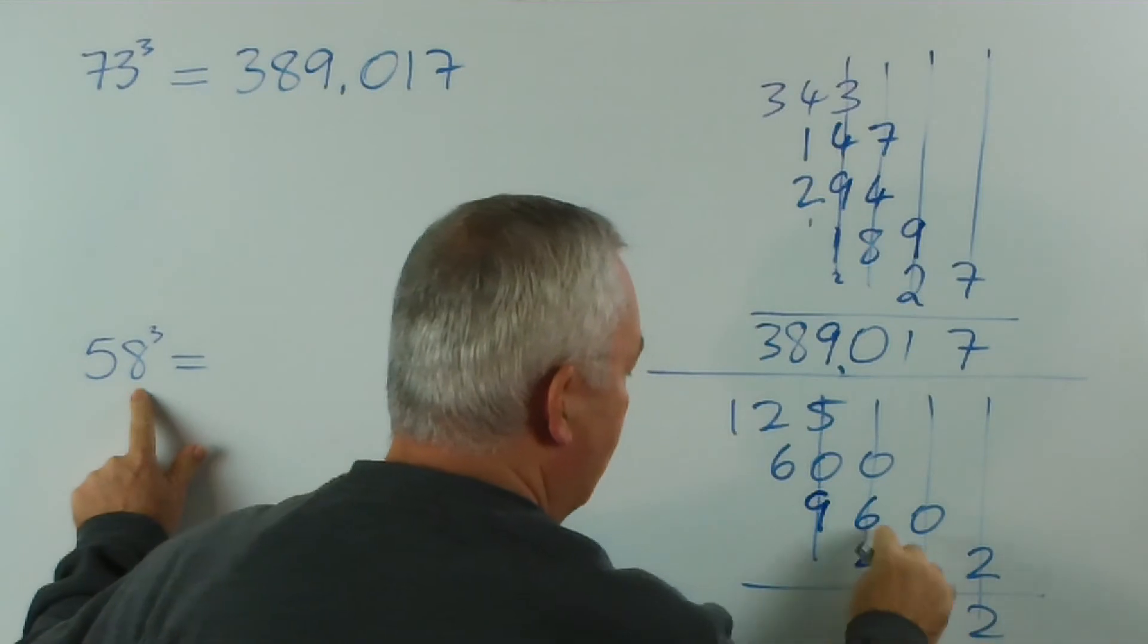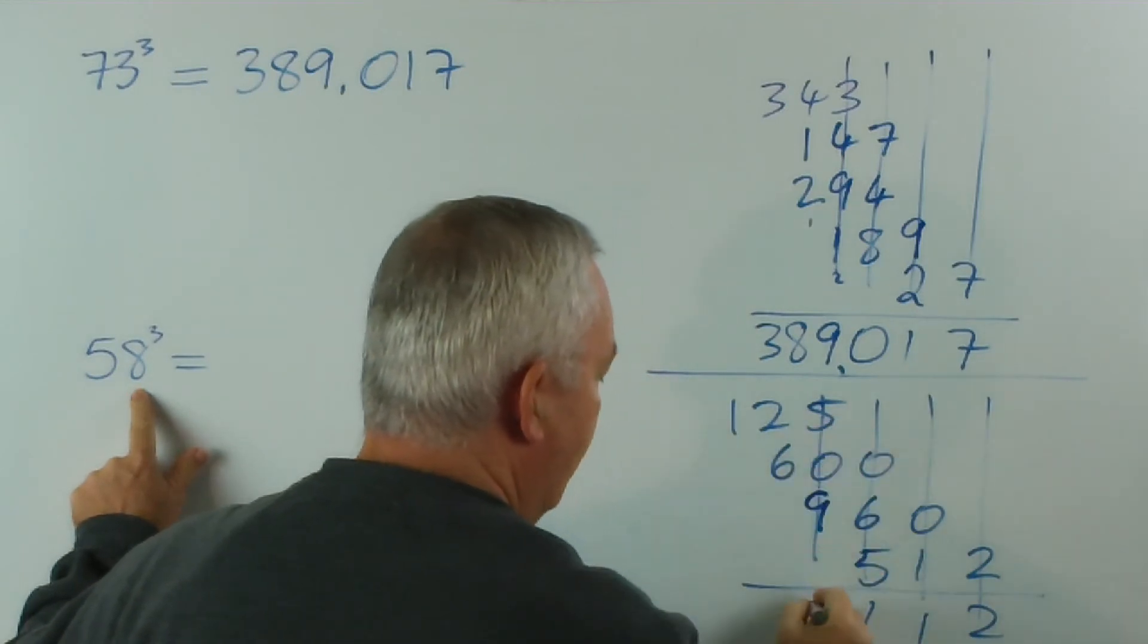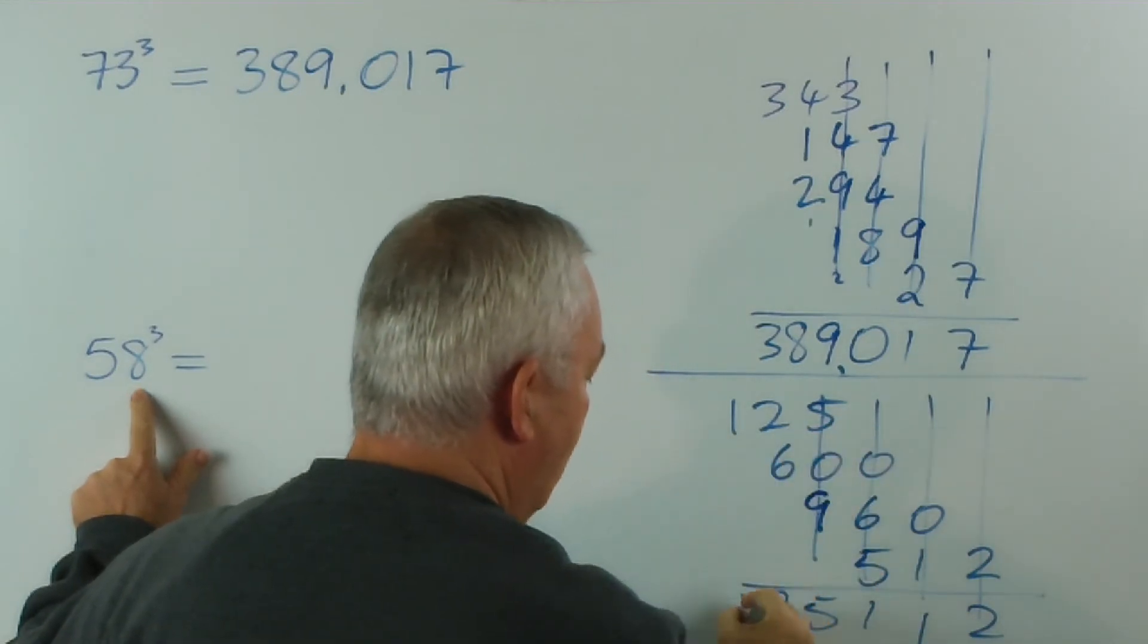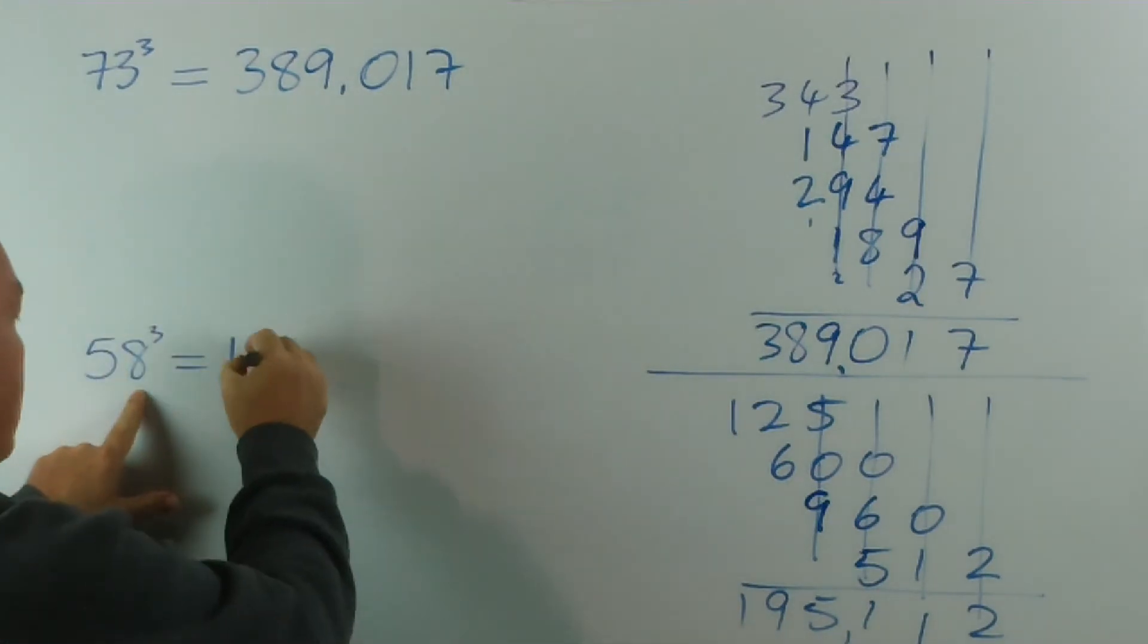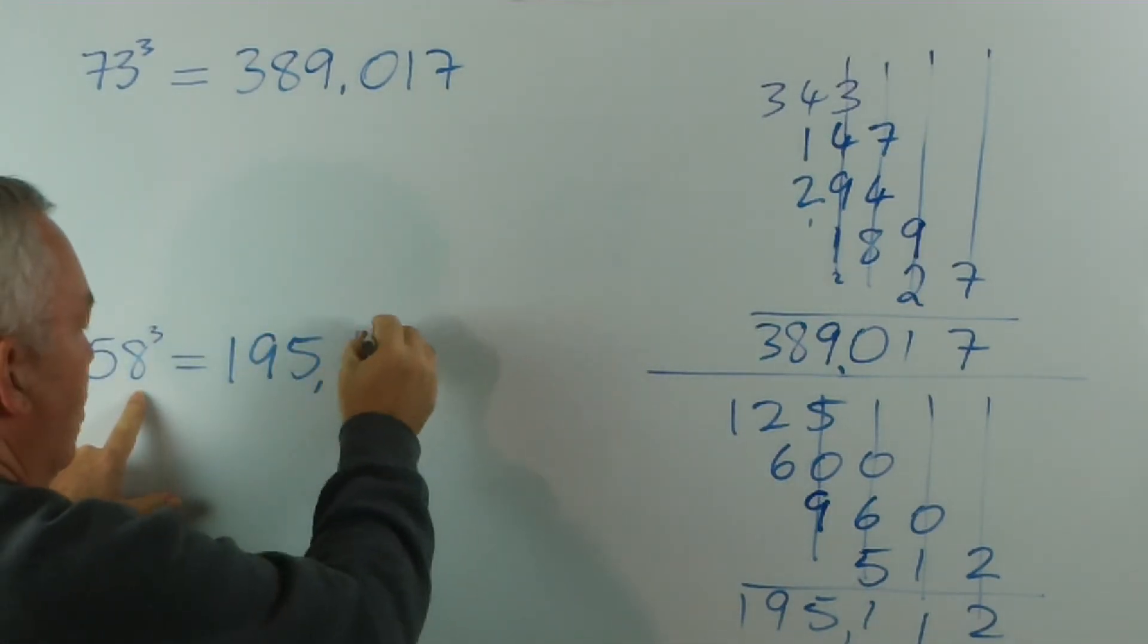Let's just add them up. Two, one, one, five, nine, one. So, we get one, nine, five, one, one, two.